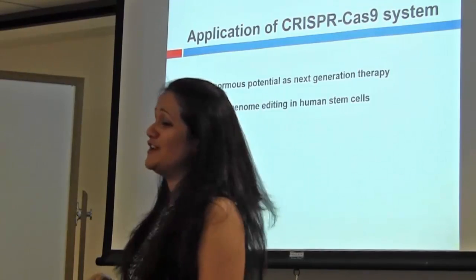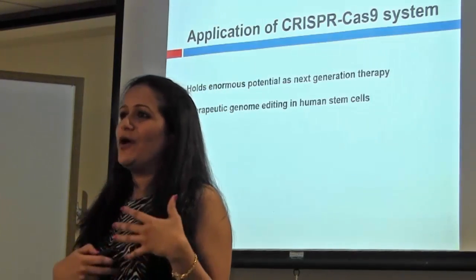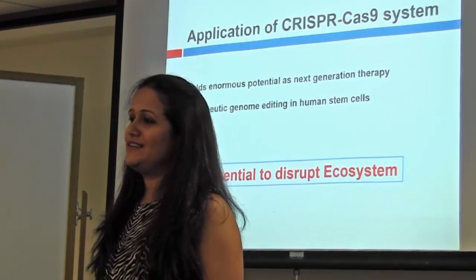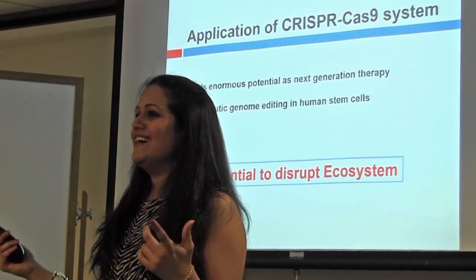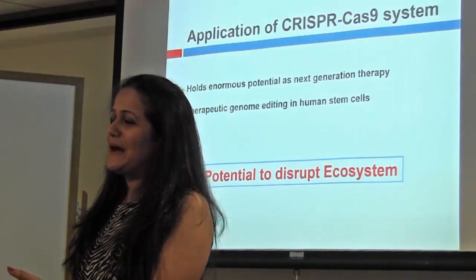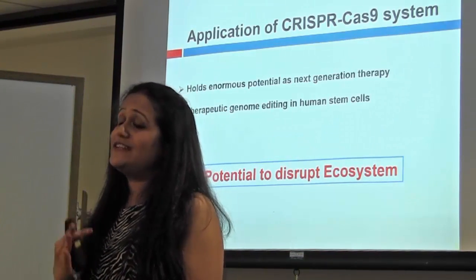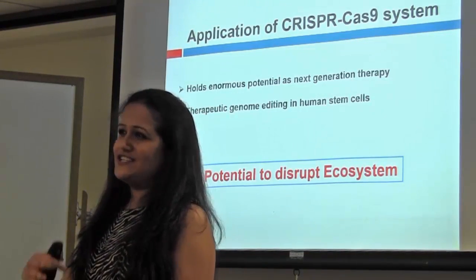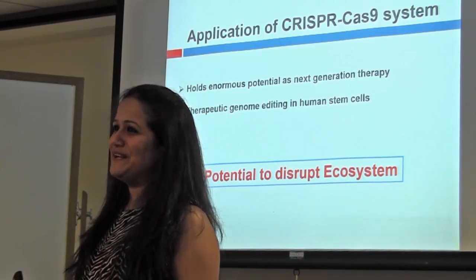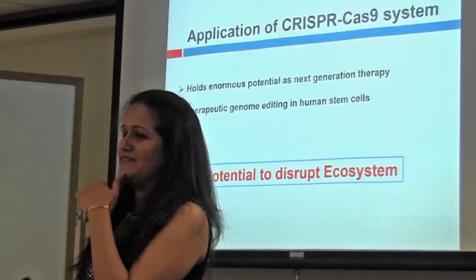Applications hold enormous potential for gene examination, editing, and therapy. Although CRISPR has a lot of potential, it can disrupt the ecosystem. People are now talking about genetically engineered human babies, which is concerning. Every scientist should be cautious about what genetic changes they are making and whether those changes will have deleterious effects on the ecosystem and environment. That is the reason Jennifer Doudna announced a pause for the usage of CRISPR in various fields.